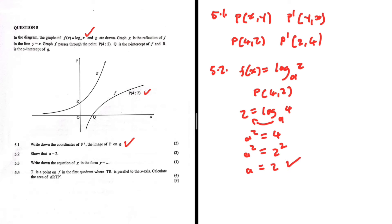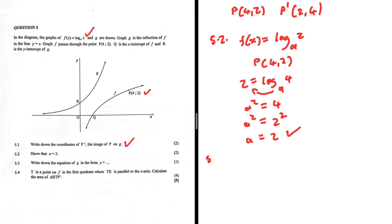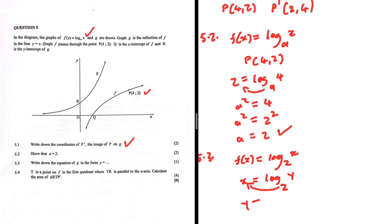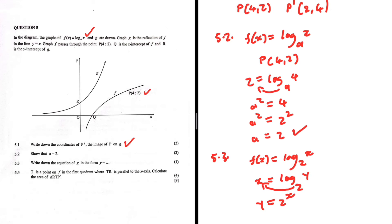Question 5.3: write down the equation of g. As established, g is the inverse of f(x). Now that we know a = 2, f(x) = log_x base 2. To find g(x) we swap x and y and solve for y. After swapping, since the base is 2, solving for y gives g(x) = 2^x. That is 5.3.